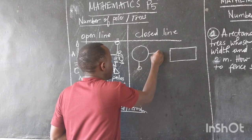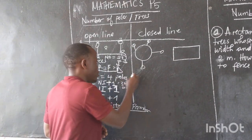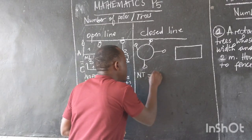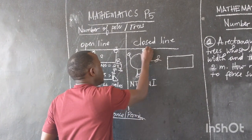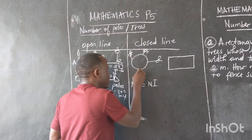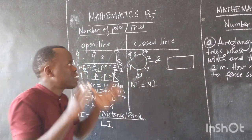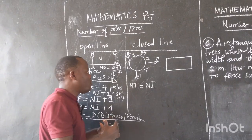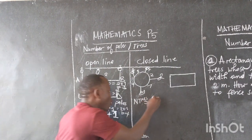For example, we have trees here — this is a tree, this is also a tree, this is also a tree, and this is also a tree. The number of trees on this closed line is equal to the number of intervals. We can prove it: tree number one, two, three, four. And the number of intervals: one, two, three, four. That's why we say on a closed line, the number of intervals is equal to the number of objects, or the number of trees equals the number of intervals.